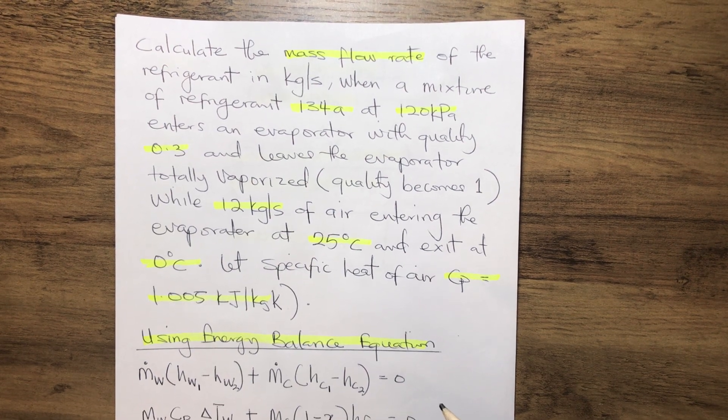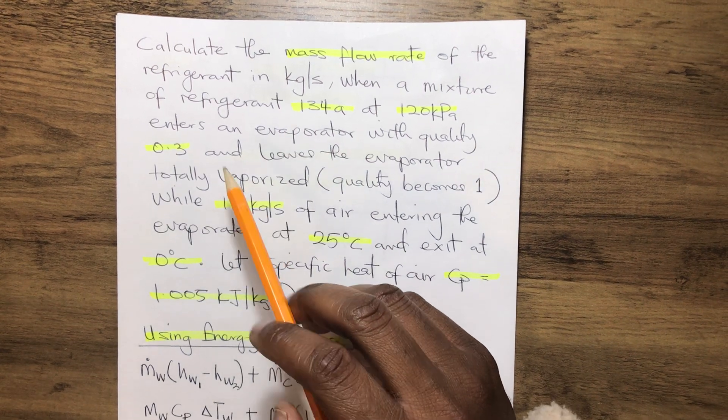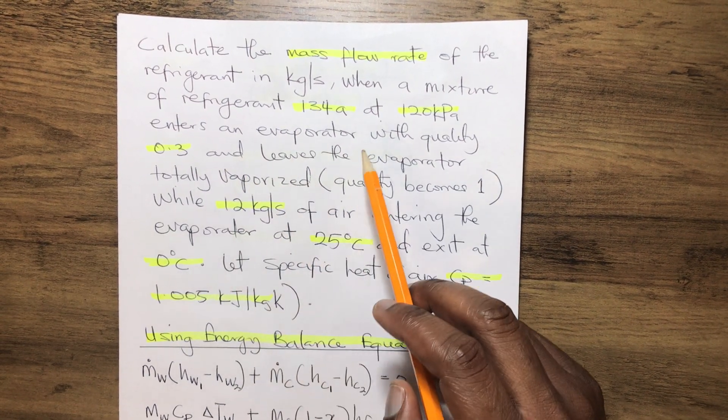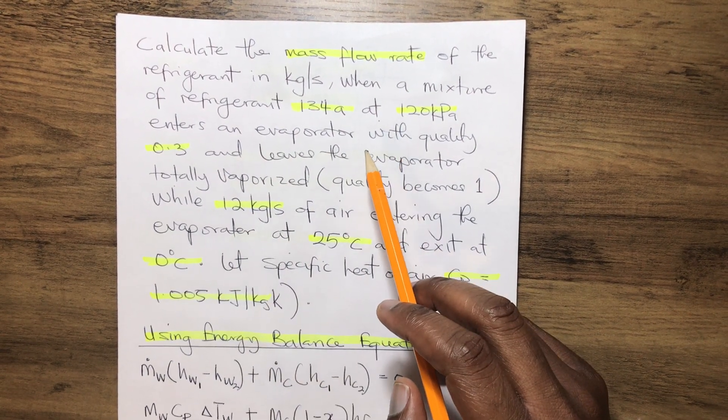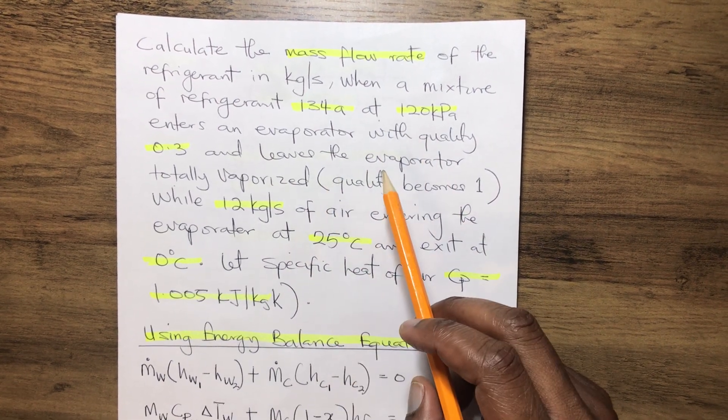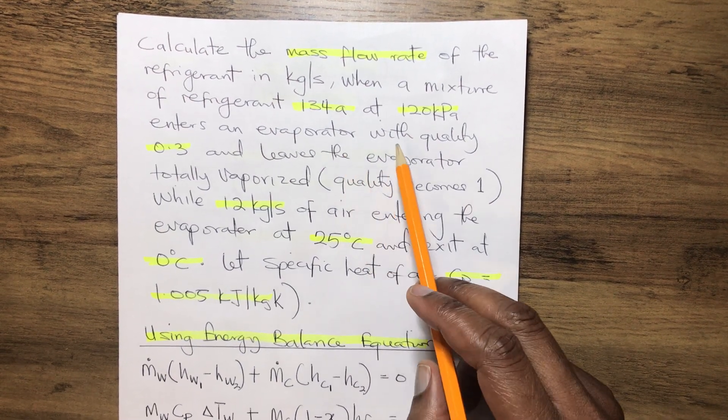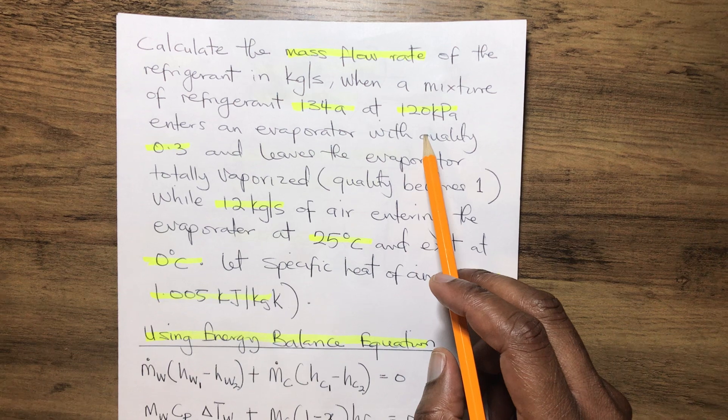Now let's read through the question we have here. Calculate the mass flow rate of a refrigerant in kilogram per second when a mixture of refrigerant 134a at 120 kilopascal enters an evaporator with quality 0.3 and leaves the evaporator totally vaporized while the quality becomes 1.